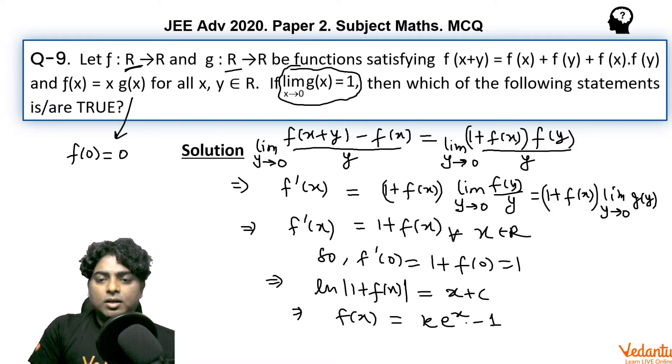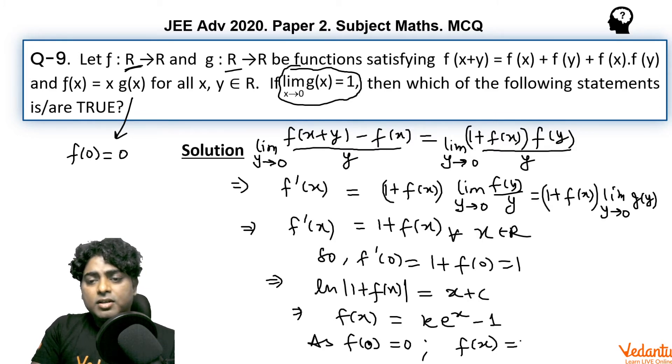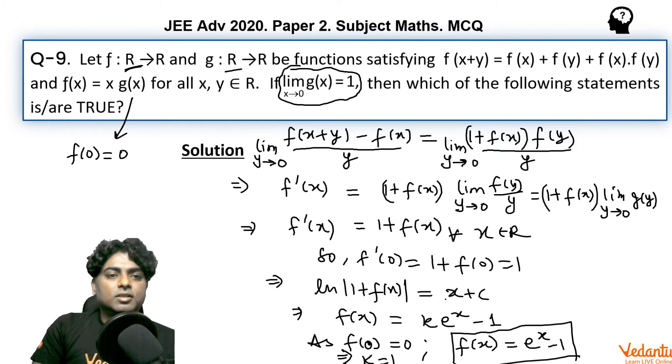But as f(0) is 0, if you put x equal to 0 over here and f(0) is 0, we can say that f(x) has to be, in that way we got k as 1, so e^x - 1 because from here you will get k is equal to 1. So finally we got f(x) as e^x - 1 which is again easily seen to be differentiable.